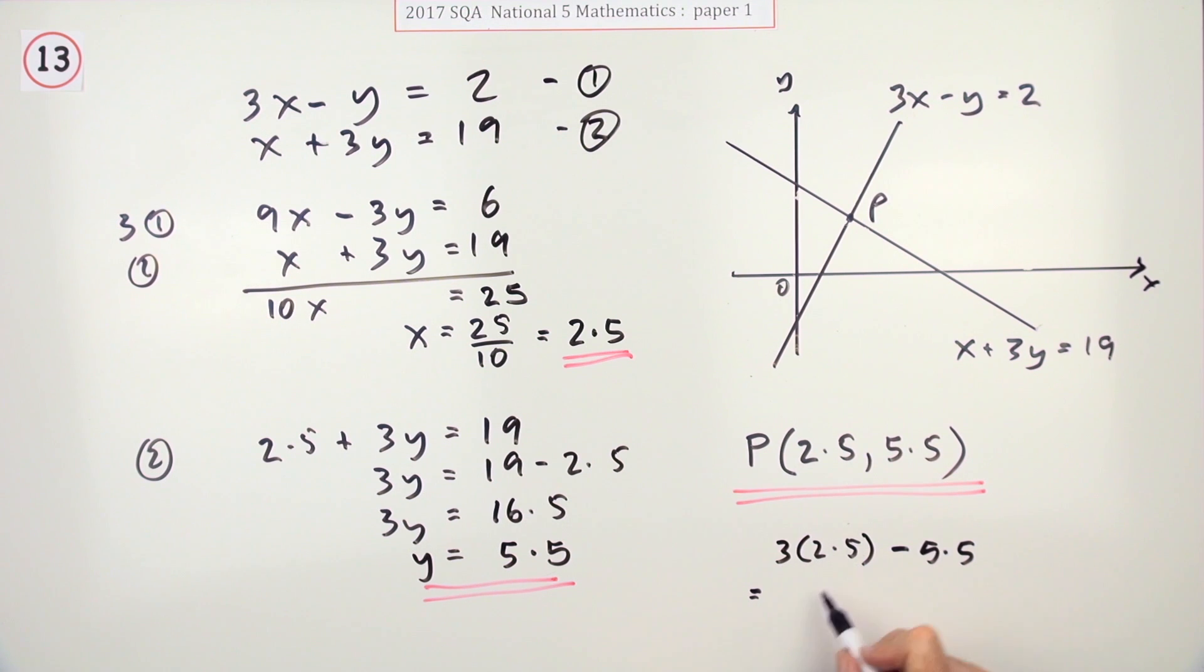Well, 3 times 2.5 is 7.5. And 7.5 take away 5.5 is 2, which it should be. So that should check that that is correct.